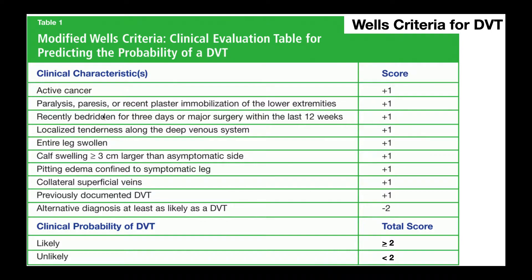In this table, on the left side we have ten different clinical characteristics, and on the right side each one is assigned an individual score. The first nine all have an individual score of plus one. Only the last one — alternative diagnosis at least as likely as a DVT — is a negative two.